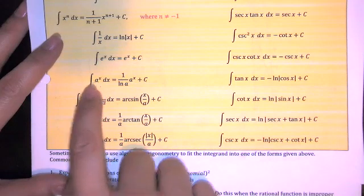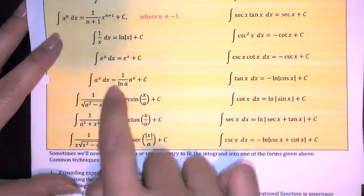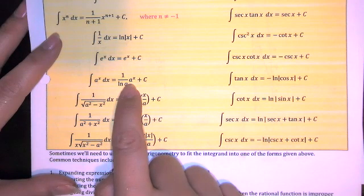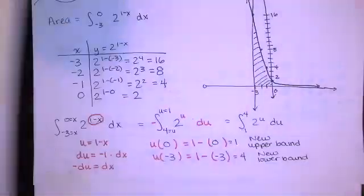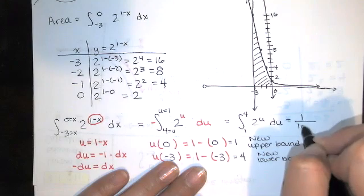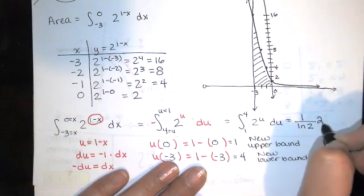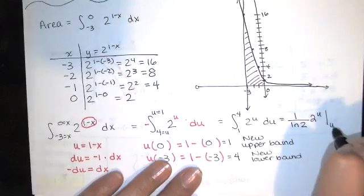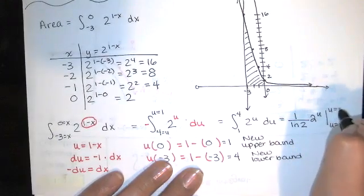So my base is 2, so that means a=2. And the antiderivative is 1 over natural log of 2 times 2 to my variable power. My variable is u, not x. So what we're going to get is 1 over ln(2) times 2^u. And we're going to evaluate this from u=1 to u=4.